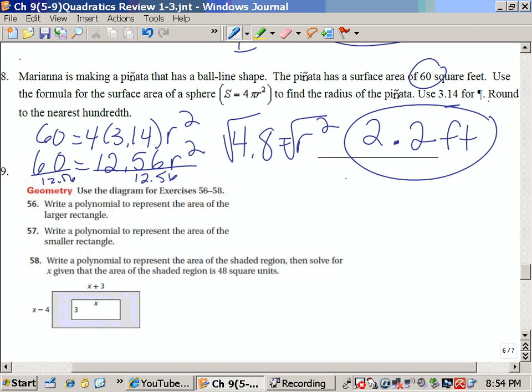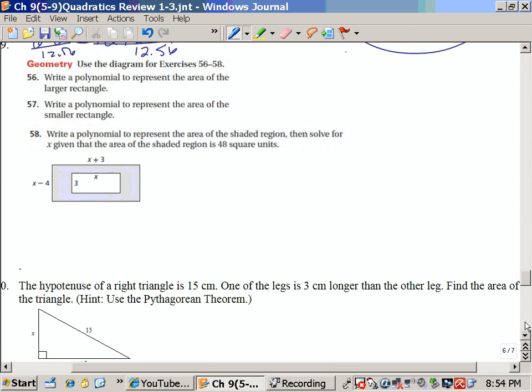56, we've actually done this problem before. I believe it was on the last test, but you have to prepare for it because it's going to be on the next test as well. The larger rectangle, we have to find the area, so that's going to be x minus 4 times x plus 3.